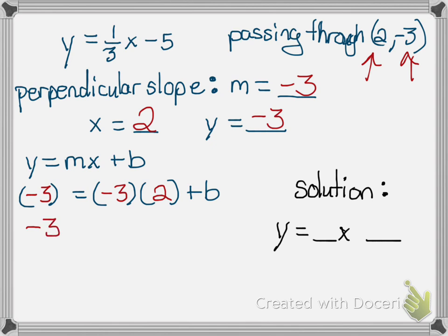So that gives me negative 3 equal to, well, negative 3 times 2 is negative 6. And then I'll bring down my plus b.